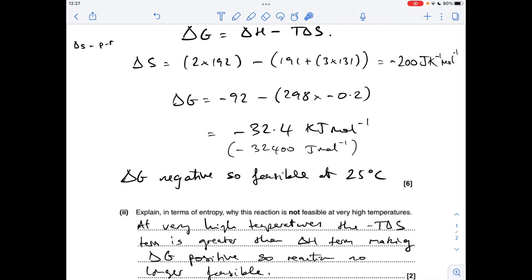And the next part, explain in terms of entropy, why the reaction's not feasible at very high temperatures. So it all boils down to the fact that at high temperatures, this minus T delta S term is going to become greater than the delta H term. So if you think about the signs as well at play here, we've got minus T delta S.